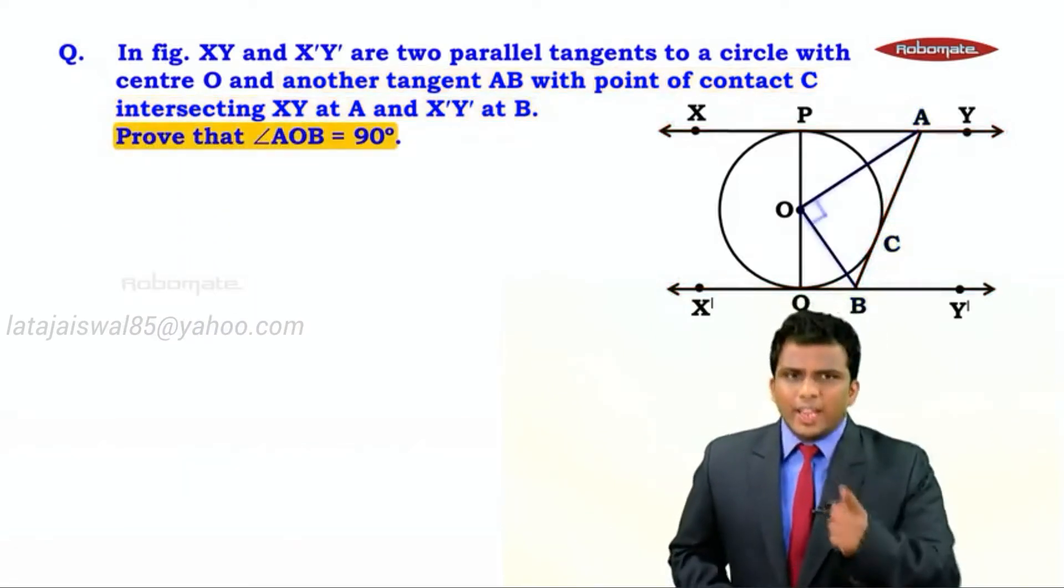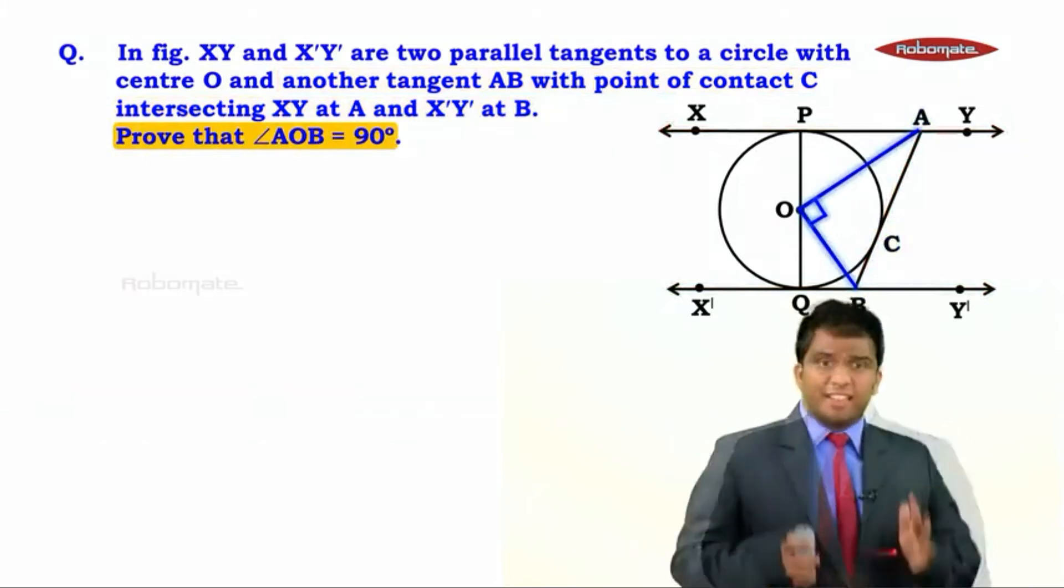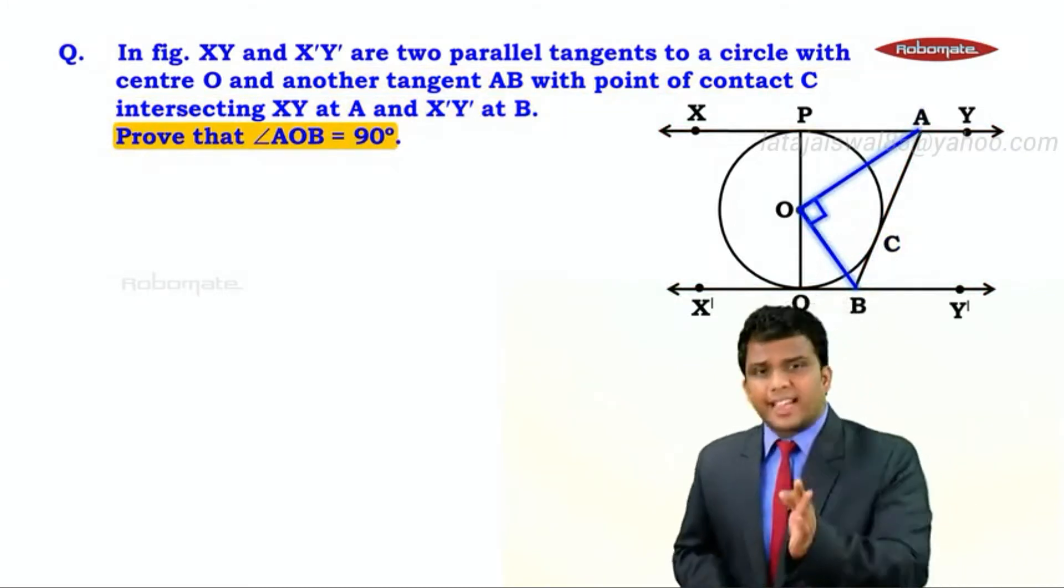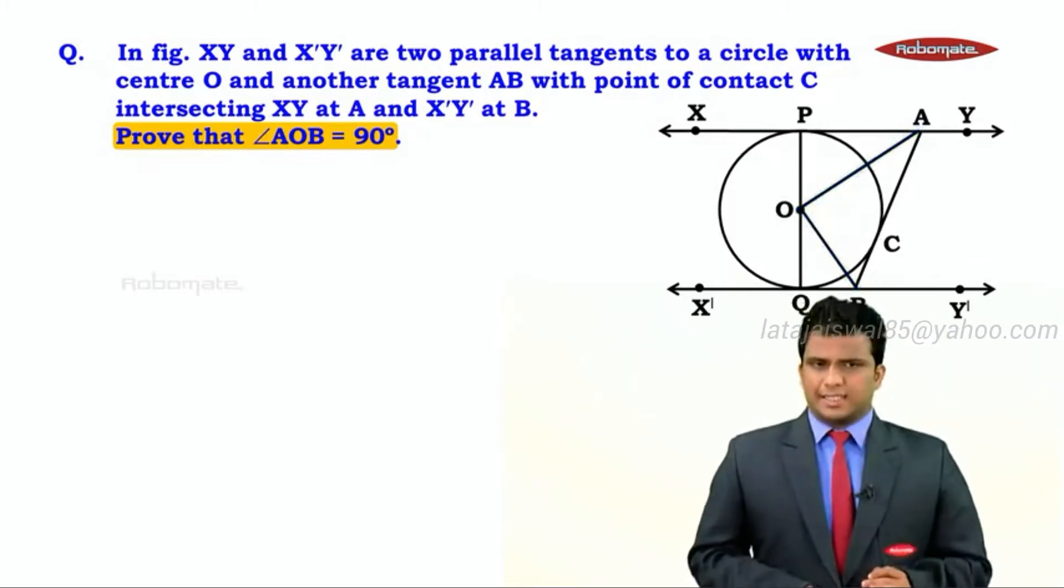We need to prove angle AOB should measure 90 degrees. This is where we intend to reach. That means angle AOB should be proved 90 degrees. Let's see how we start the sum.